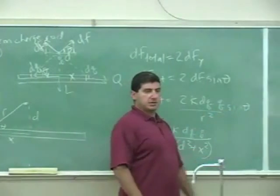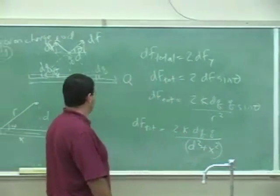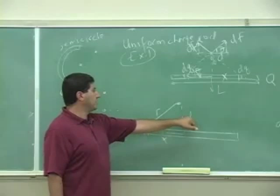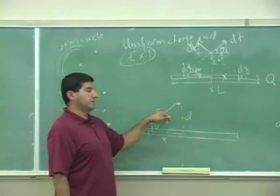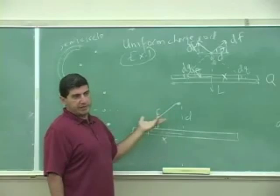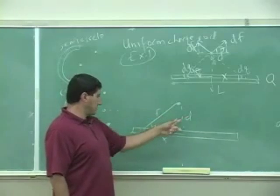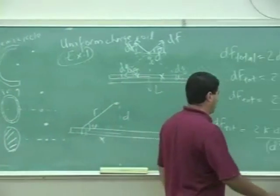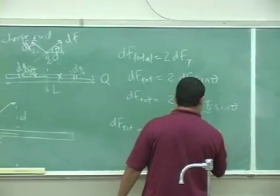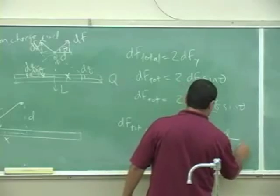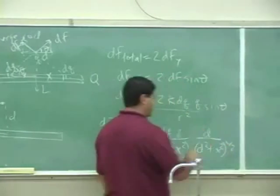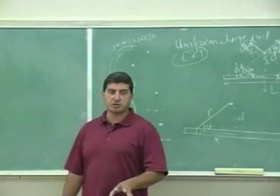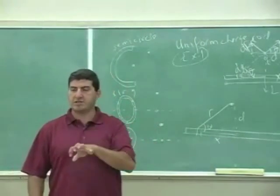Times sine theta, and then sine of theta is d divided by r, which will be r is d squared plus x squared to the one half power. So sine of theta is d divided by d squared plus x squared to the one half power. In other words, I don't want to leave anything in the expression in terms of r. I want to have everything in terms of x.